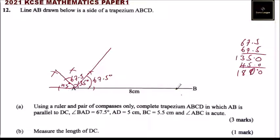Having constructed that angle, you are told that AD is 5 cm. So you are going to measure 5 cm, you get AD. We are told that AD is parallel to DC, so you can draw a parallel line here.